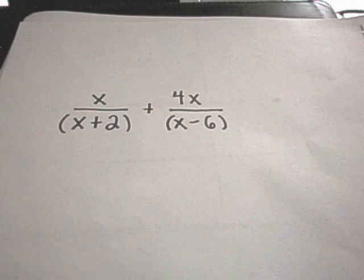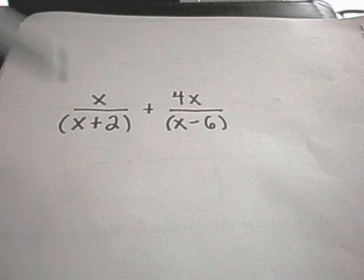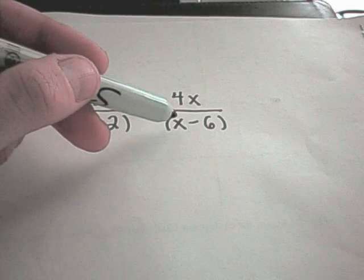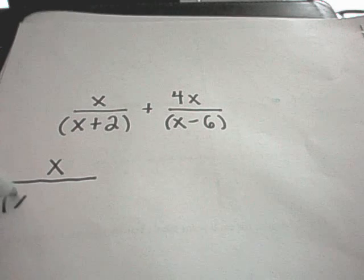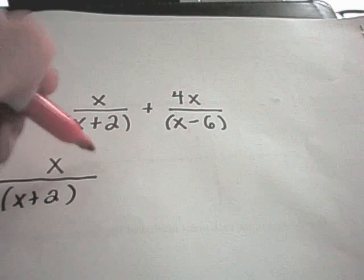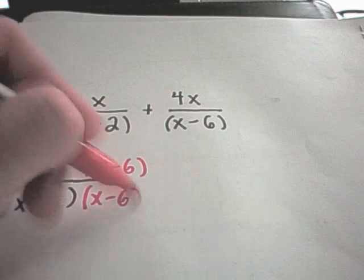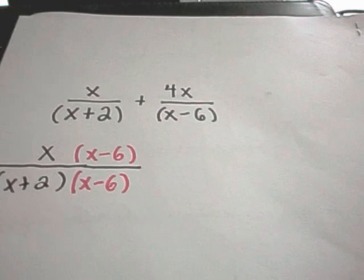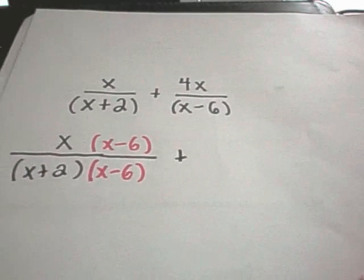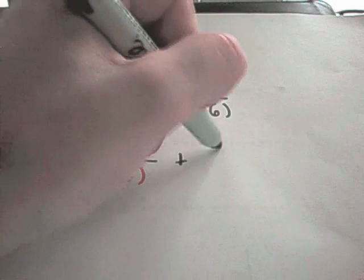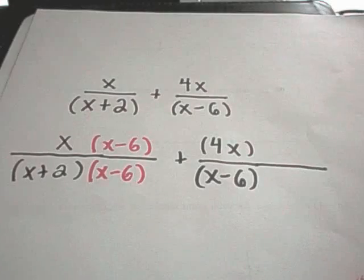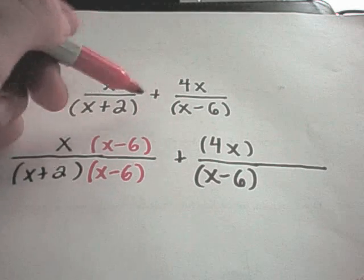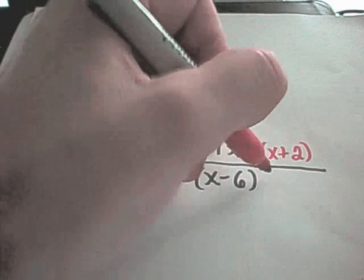So let's do a couple others here. In this one I have x over x plus 2 plus 4x over x minus 6. Well here the least common multiple of the quantity x plus 2 and the quantity x minus 6 is the quantity x plus 2 times the quantity x minus 6. So for the first fraction I have x over x plus 2. I'll have to multiply top and bottom of that fraction by x minus 6. And then for the other one, the 4x part, I'll have 4x over x minus 6.